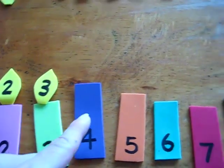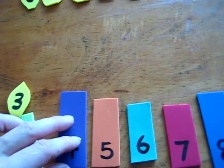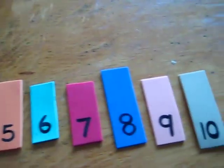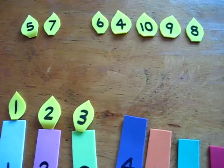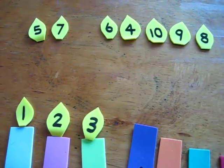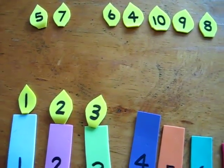Then you can talk about the colors, the sizes. Then you can even put them from the tallest to the shortest. You can do all kinds of things by using the little candle object for our birthday theme.